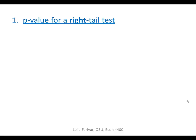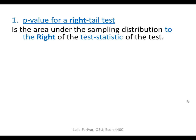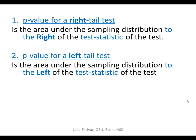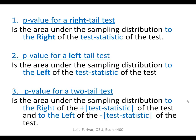Before we start Gretl, it's good to review p-values. The p-value for a right-tailed test is the area under the sampling distribution to the right of the test statistic. The p-value for a left-tailed test is the area to the left of the test statistic. And the p-value for a two-tailed test is the area to the right and to the left of the positive and negative absolute value of the test statistic.